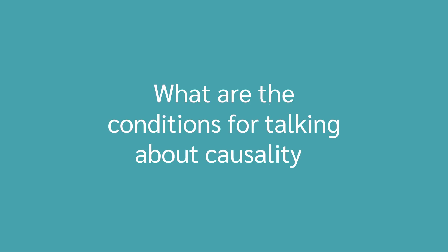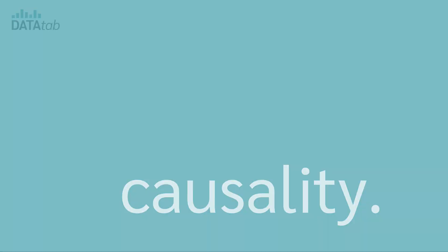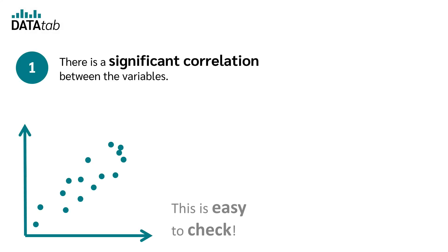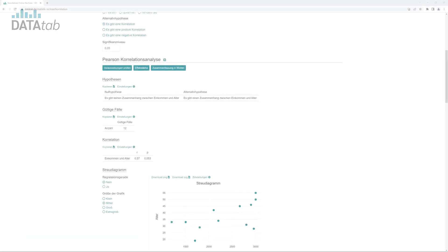What are the conditions for talking about causality? There are two conditions for causality. Number one, there is a significant correlation between the variables. This is easy to check.